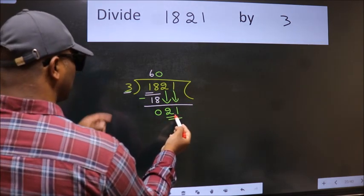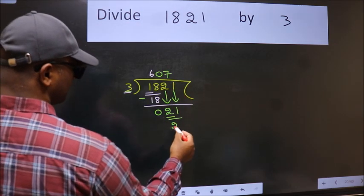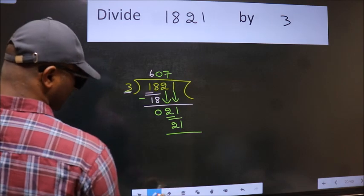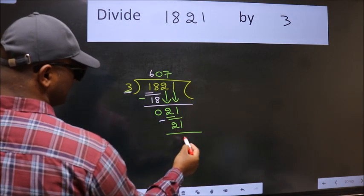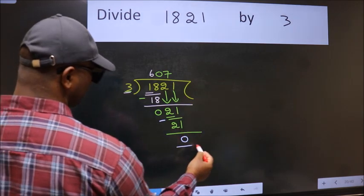So 21. When do we get 21 in 3 table? 3, 7, 21. Now we subtract. We get 0. No more numbers to bring it down. So we stop here. This is our remainder and this is our quotient.